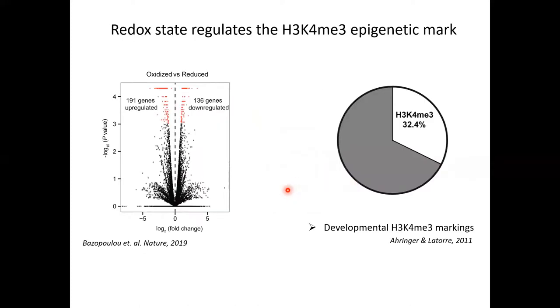Briefly, just to get a little bit more into the mechanism, we went back to the oxidized and reduced subpopulations as sorted at the L2 stage. We did transcriptomics to compare the gene expression at the genome wide level. This gave us about 300 genes that were differentially regulated between these two subpopulations. We compared this list of genes with publicly available datasets.